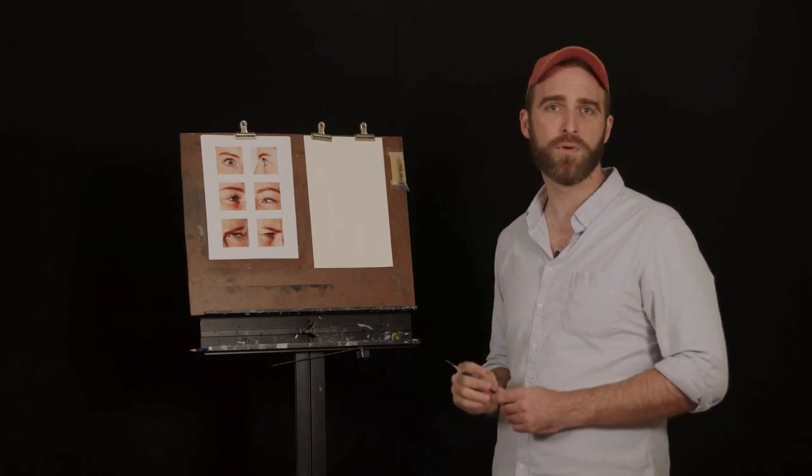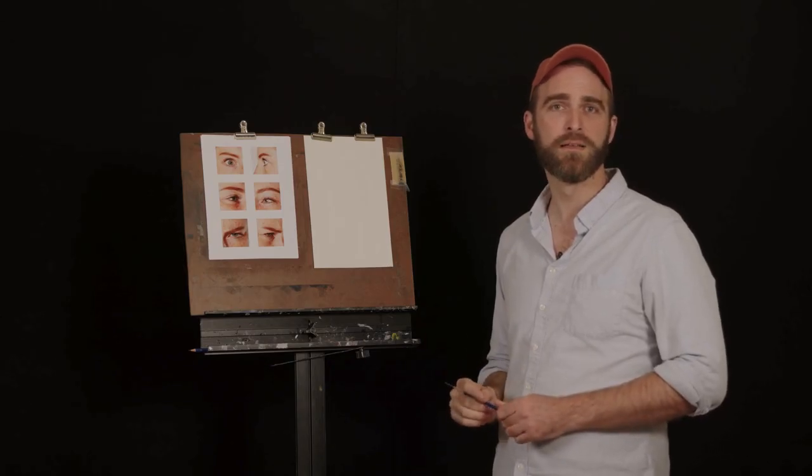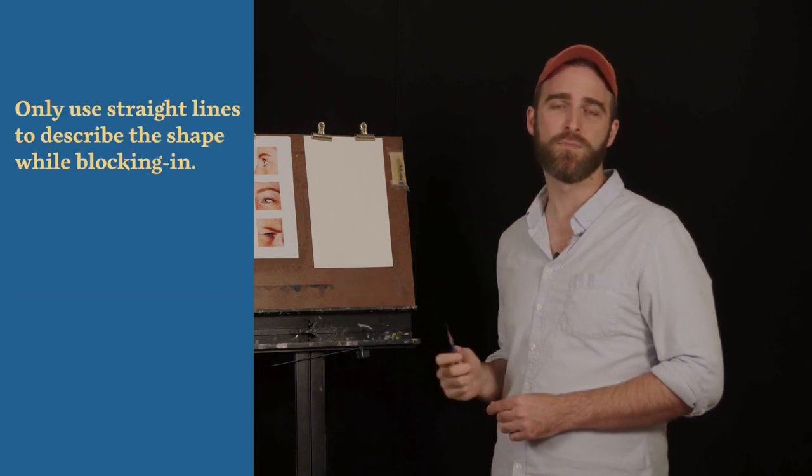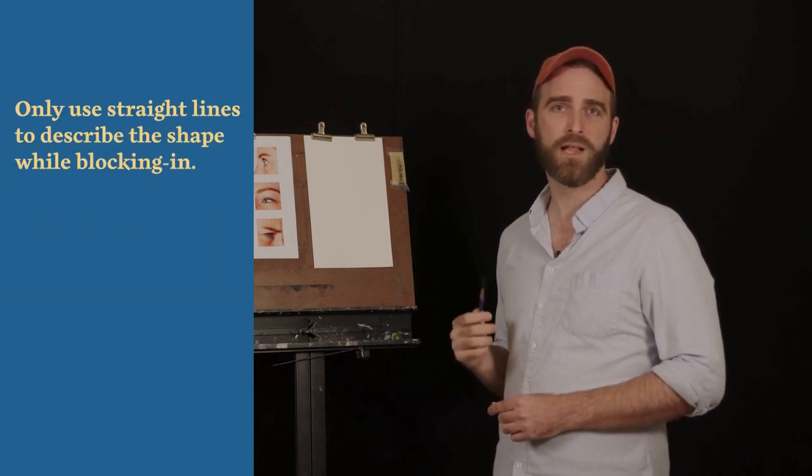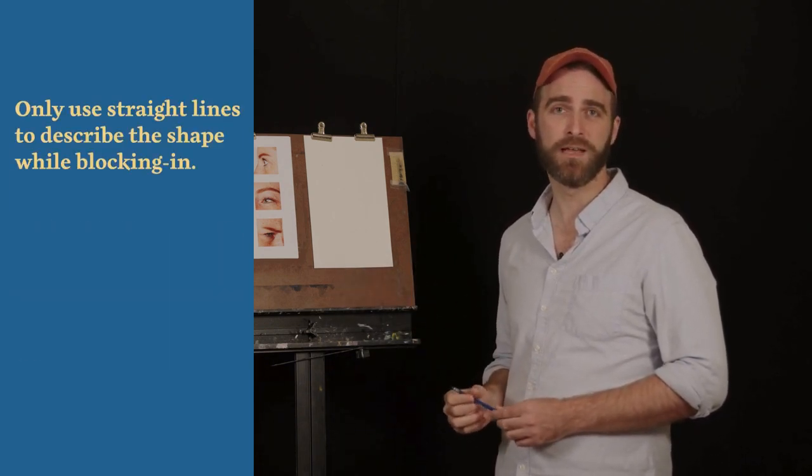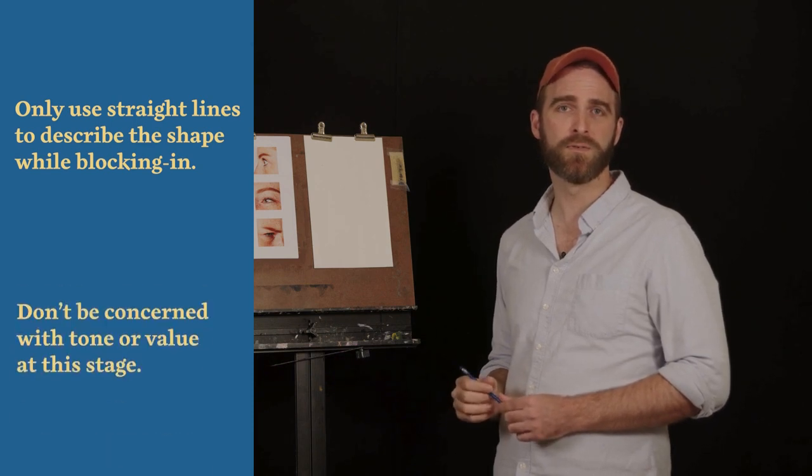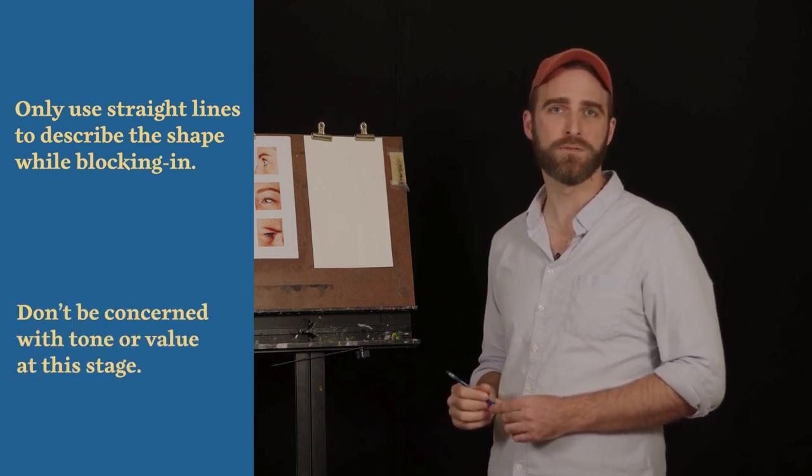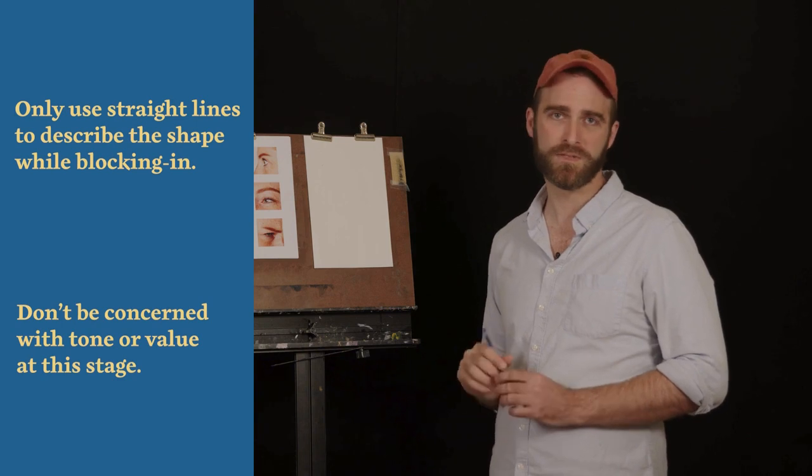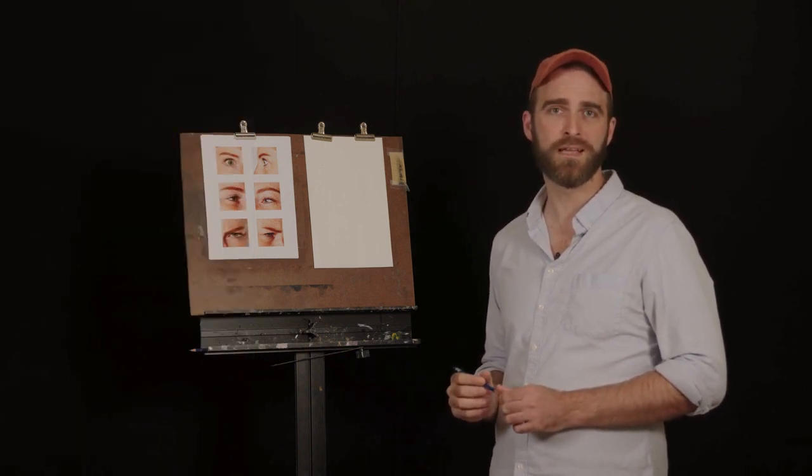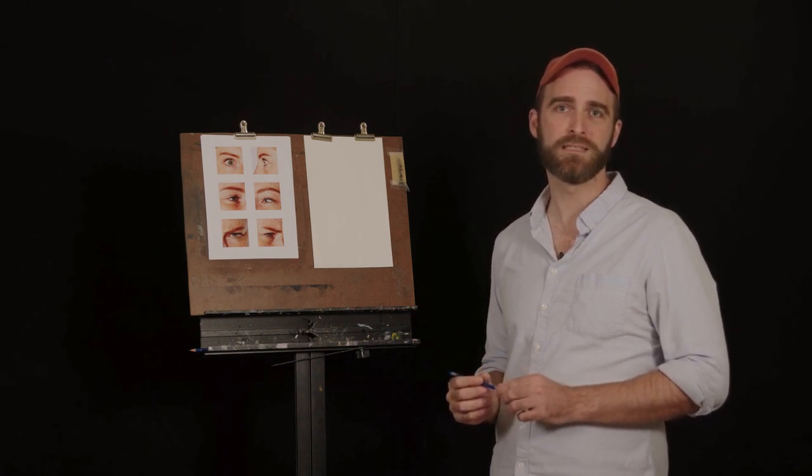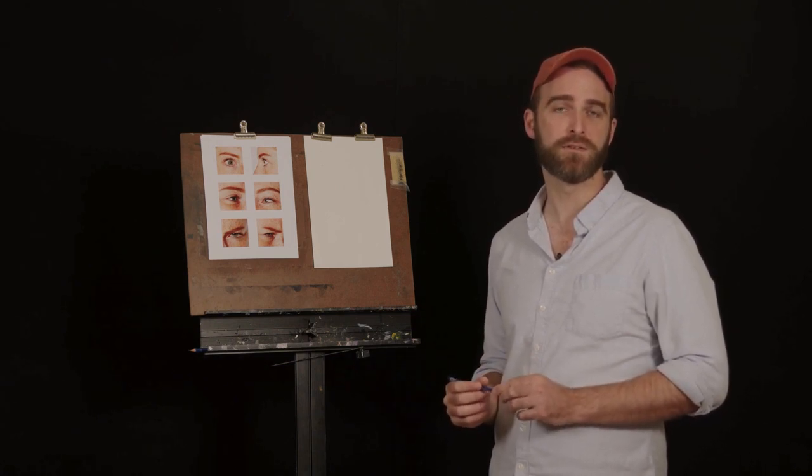Now this is very important and you'll hear me repeat this often. I'm only using straight lines to describe this shape while blocking in. Block-in should not contain any curved lines. I'm also not concerned with tone or what we call value at this stage. That's for much later on. This is more difficult than it may seem and you'll find that at the beginning of your drawing, much of your time will be spent at this stage trying to get the shapes to fit together correctly.